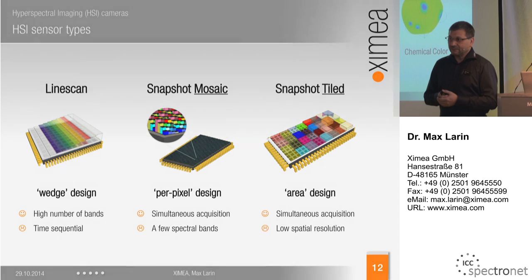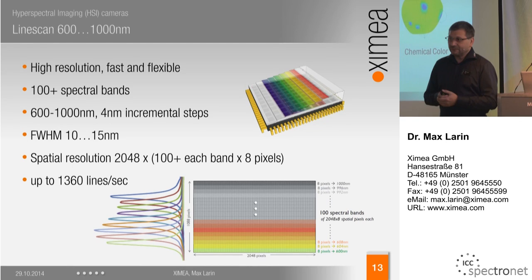A few more words about the line scan sensor — here is how it looks. It has more than 100 bands, each band having 8 pixels in height. The filter parameters show a full-width half-maximum of 10 to 15 nanometers. The spatial resolution is 2,048 pixels with 100 bands across the height, delivering 1,360 lines per second. In terms of the hyperspectral cube, this is effectively a diagonal cut through the cube, where each spatial line contributes to a particular part of the cube at its respective wavelengths.